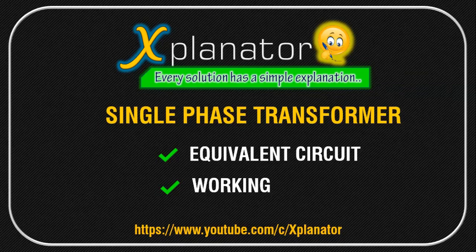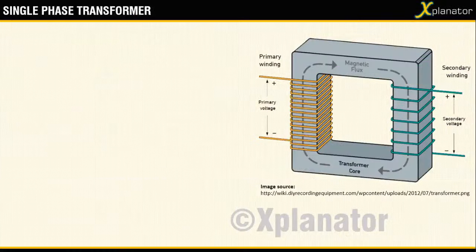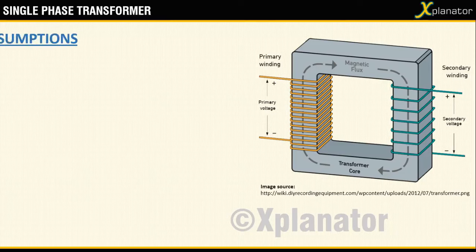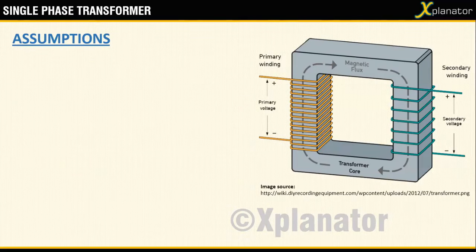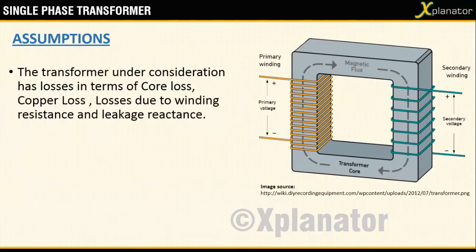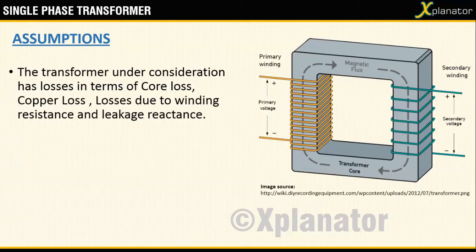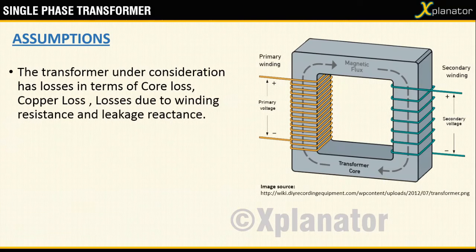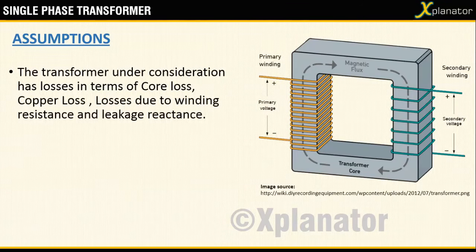Before we move on to the drawing of the equivalent circuit, here are some of the assumptions that have been considered. First, the transformer under consideration has losses in terms of core loss, copper loss, losses in the winding resistance and leakage reactance.